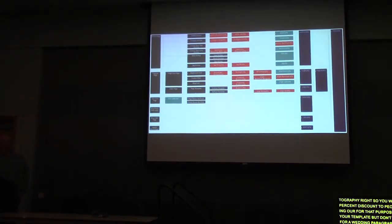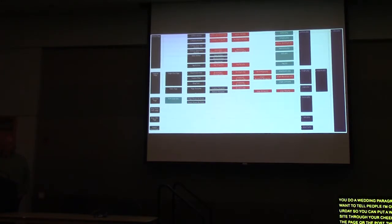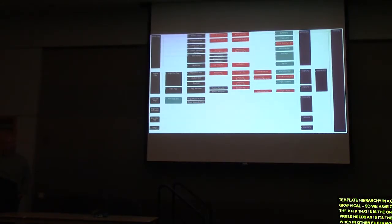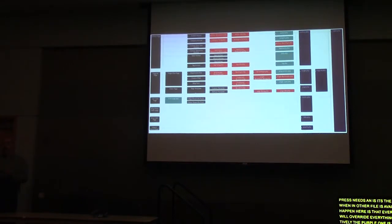This graphic shows the full template hierarchy. On the right is index.php — the one file every WordPress theme needs, which loads when no other file is available. Everything on the left overrides everything to the right. The purple ones are the default PHP files; the green ones are basic overrides. For example, at the top you have author.php, and to its left is author-{ID}.php — you can create custom templates for each author. If you're building a website with 12 contributors and want to add their Twitter or Patreon information, you can do that through the author ID process.